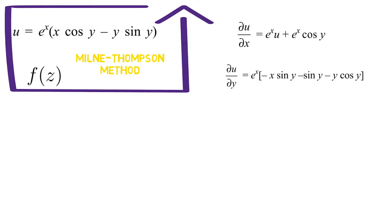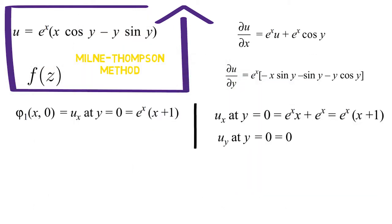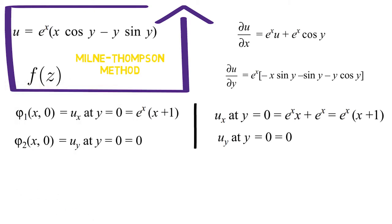with respect to y and call it uy. Next, we substitute y equals to 0 in both ux and uy to get psi 1 of x comma 0 and psi 2 of x comma 0.